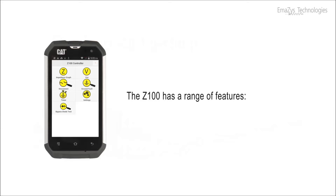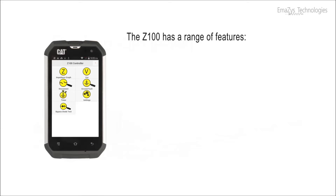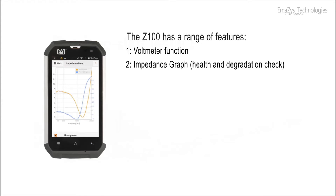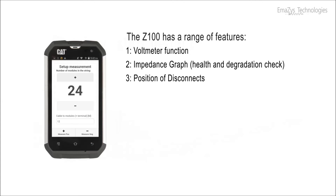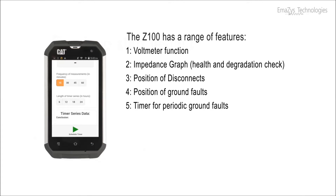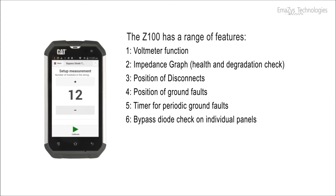The Z100 PV Analyzer has a range of features: voltmeter function, impedance graph, health and degradation check, position of disconnects, position of ground faults, timer for periodic ground faults, bypass diode check on individual panels, and report settings.